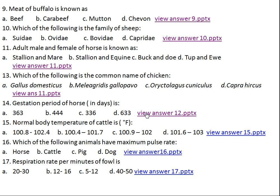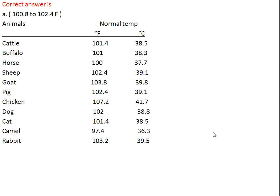Question number fifteen: normal body temperature of cattle is which? Option A: 100.8 to 102.4°F, Option B: 100.4 to 101.7°F, Option C: 100.9 to 102°F, Option D: 101.6 to 103°F. The right answer is Option A, 100.8 to 102.4°F. In case of cattle the normal temperature is 101.4°F, which is the same as that of cat.